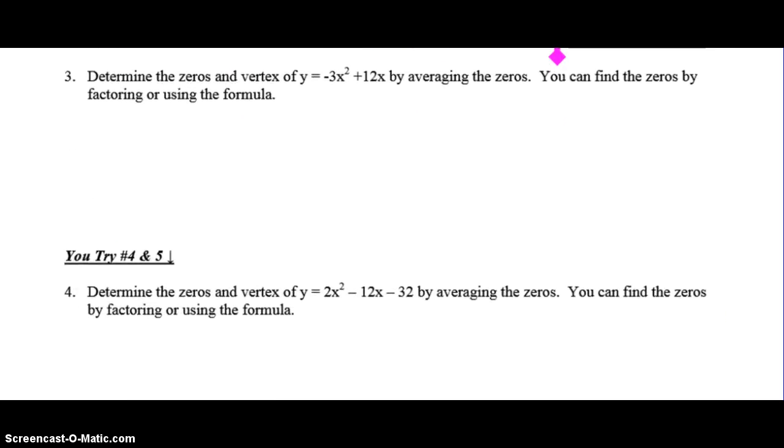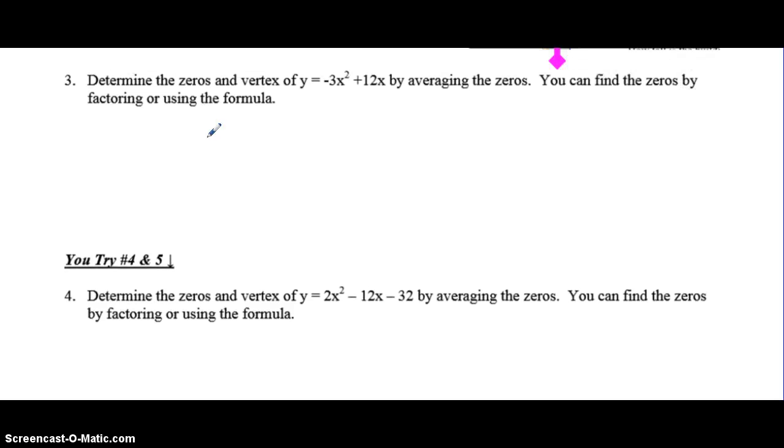Now, you could get a question like number 3 where it has not already been factored. So what you have to do is decide on the type of factoring that has. Well, since they can both be divided by negative 3, and they both have an x, that is a common factor. So we are going to common factor out a negative 3x. And when you divide them both by negative 3x, you get x minus 4.